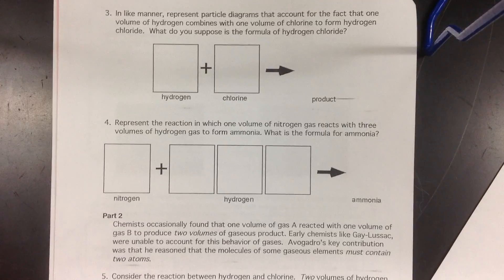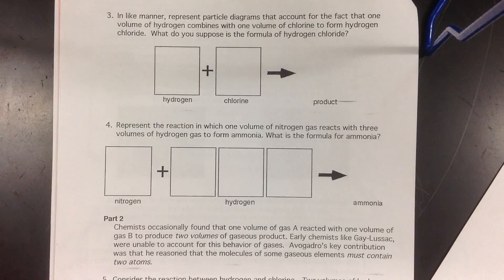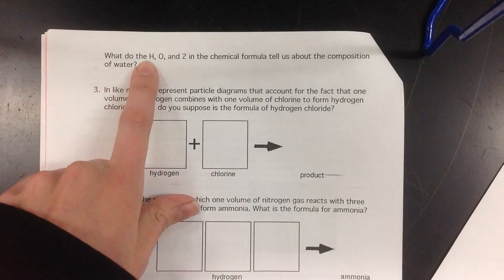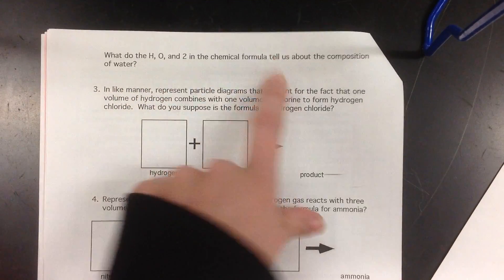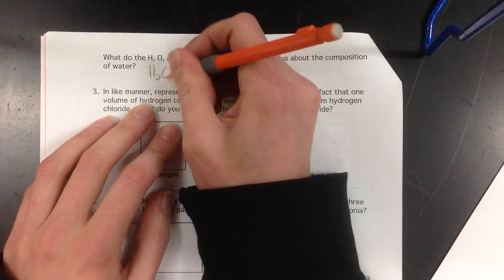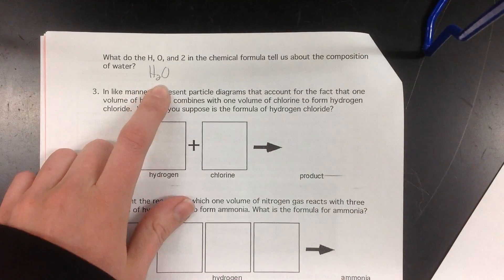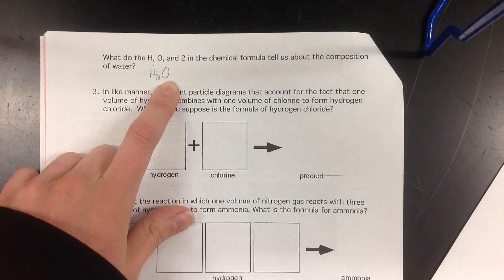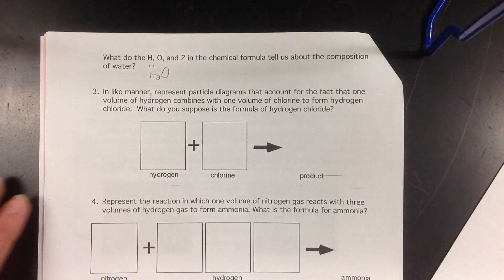This is how they came up with formulas for your products. Now, at the very top, what does the H, the O, and the 2 describe? So if we've got H₂O for water, what does the H mean? What does the 2 mean? What does the O mean? Please go ahead and answer that off to the side.